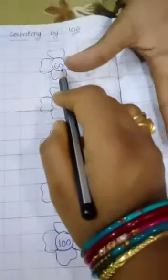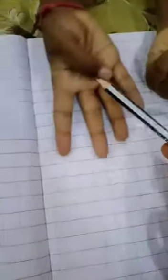60. After 60, 10 fingers open. 61, 62, 63, 64, 65, 66, 67, 68, 69, 70.